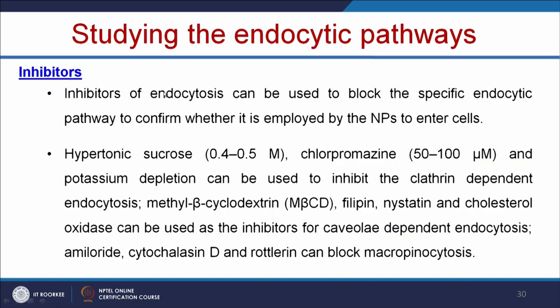There are several inhibitors available to block specific endocytic pathways and confirm which pathway nanoparticles employ to enter cells. Hypertonic sucrose, chlorpromazine, and potassium depletion can be used to inhibit clathrin-dependent endocytosis. Other chemicals inhibit caveolae-dependent endocytosis, and other molecules can be used to block macropinocytosis. By using these chemicals to block a particular endocytic pathway and then adding nanoparticles, we can determine whether the nanoparticle follows that specific pathway.